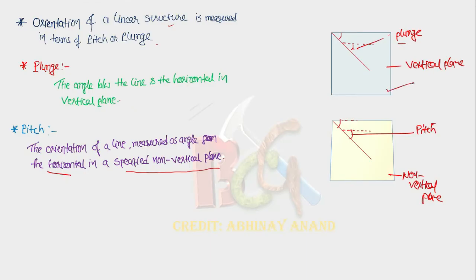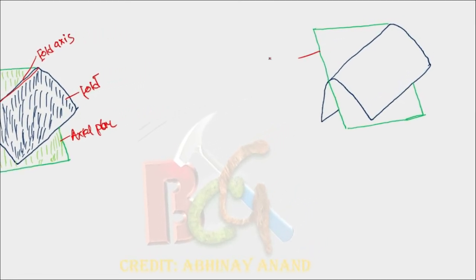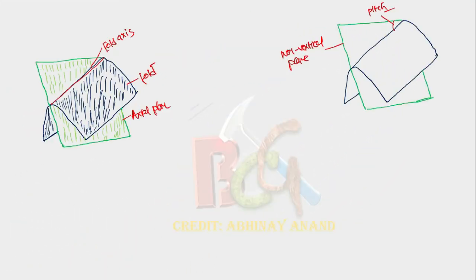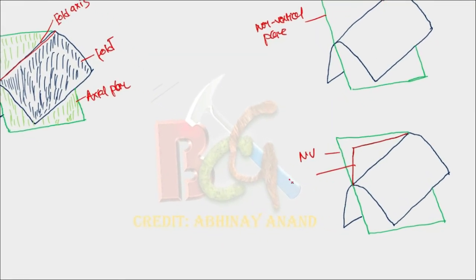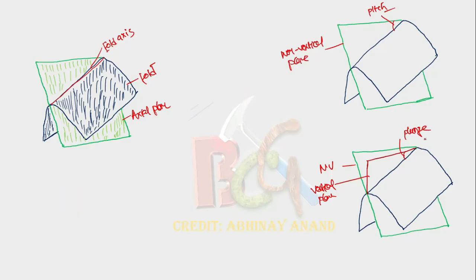The difference between plunge and pitch: plunge is measured in a vertical plane, whereas pitch is measured in a specified non-vertical plane. The question asks about the fold axis. We measure the fold axis in terms of pitch and plunge. In the diagram, this non-vertical plane shows the pitch angle. The red one is vertical. The same fold axis in a vertical plane gives the plunge. Because these are different planes, the values will be different.